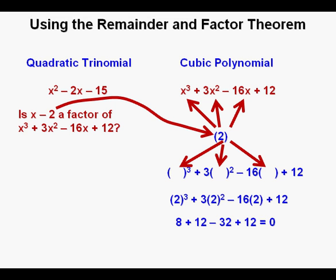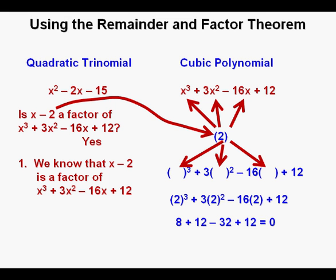And this lets us know two things. First, the answer to our earlier question is yes, that the binomial x minus 2 is in fact a factor of x cubed plus 3x squared minus 16x plus 12.